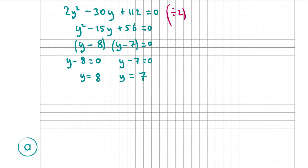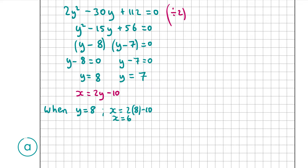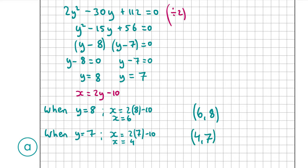We're not done yet — we have our y values but we also need the corresponding x values. We substitute back into the linear equation x = 2y − 10. When y = 8: x = 2(8) − 10 = 6. When y = 7: x = 2(7) − 10 = 4. So our two coordinate solutions are (6, 8) and (4, 7), and that's our answer for part a.